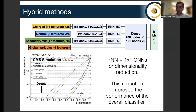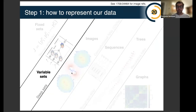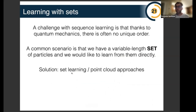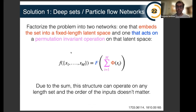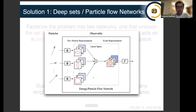Next I'll talk about variable sets. A challenge with sequence learning is that, thanks to quantum mechanics, particles often come to us with no unique order — I could impose energy ordering, but that's not unique. A common scenario is a variable-length set, where I can permute the constituents. Here you can use set learning; one approach is called Deep Sets. The idea is to factorize the problem into two neural networks: one that embeds set elements into some latent space, and another that acts on the sum of the latent space vectors. Sums are permutation-invariant and naturally accommodate variable length, making this provably universal for variable-length set learning.